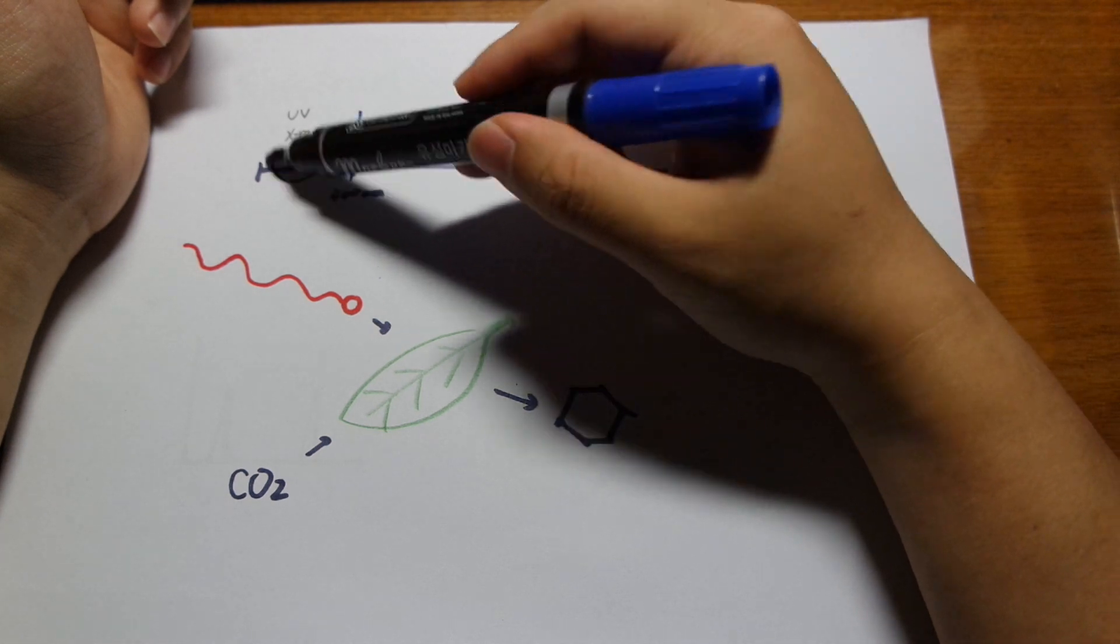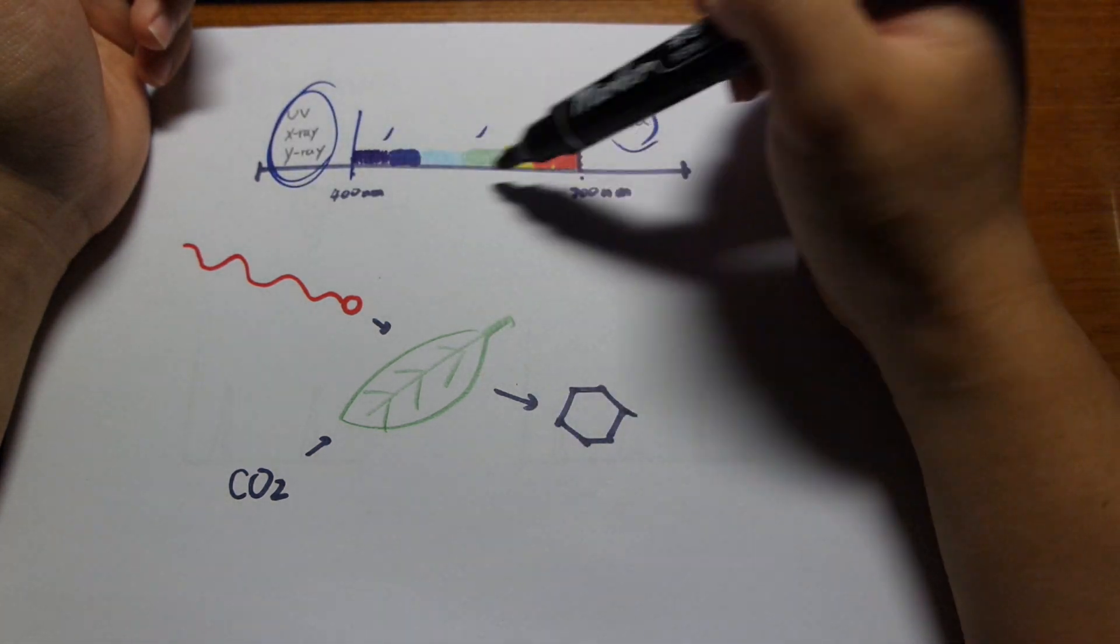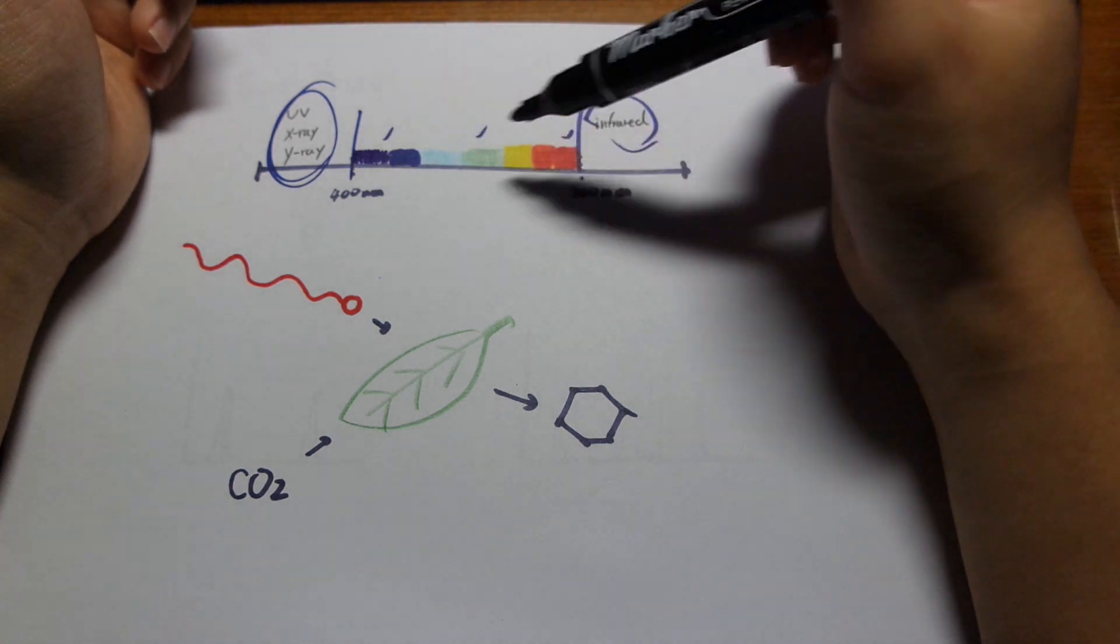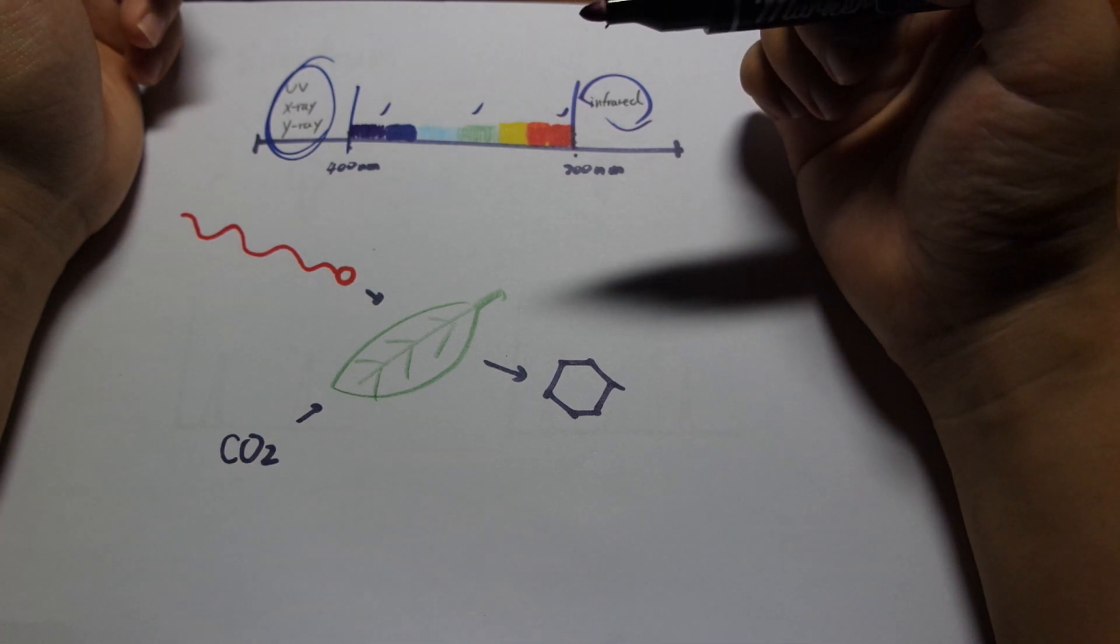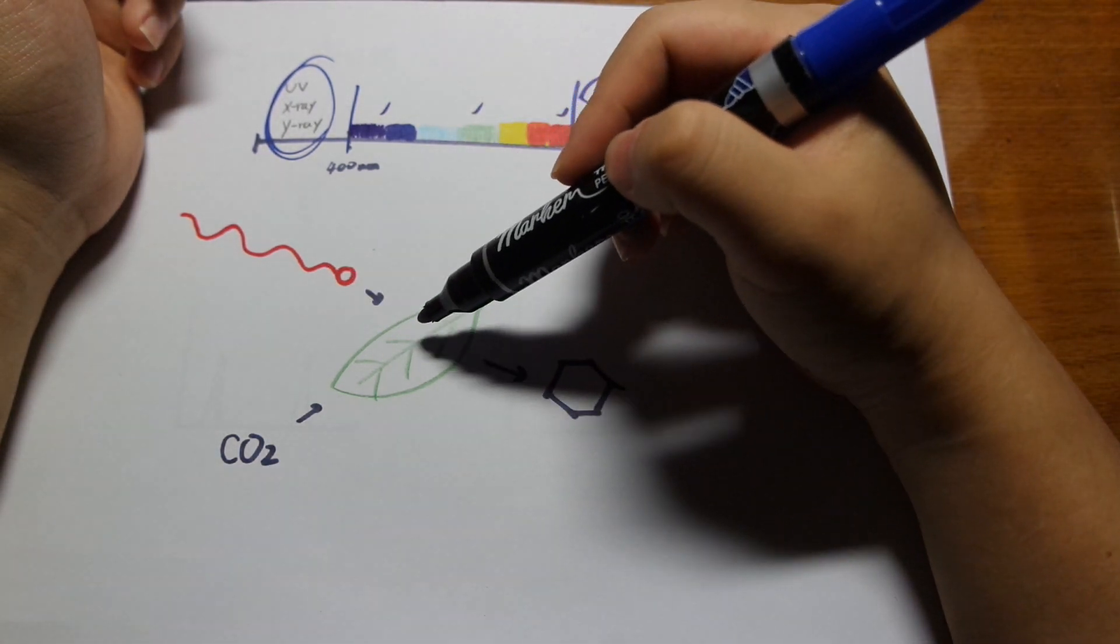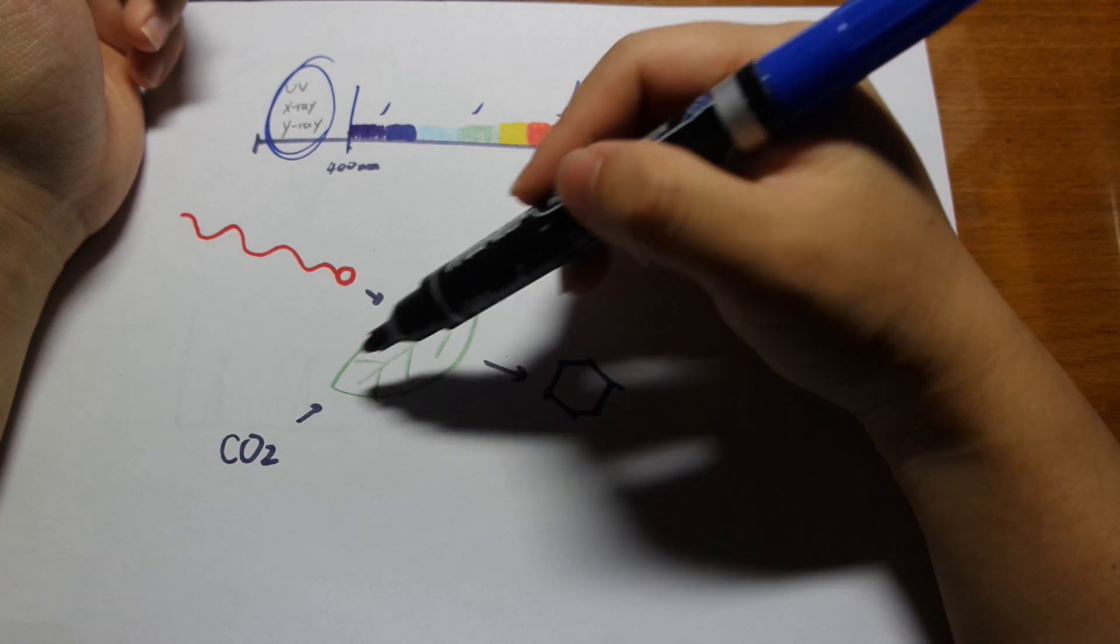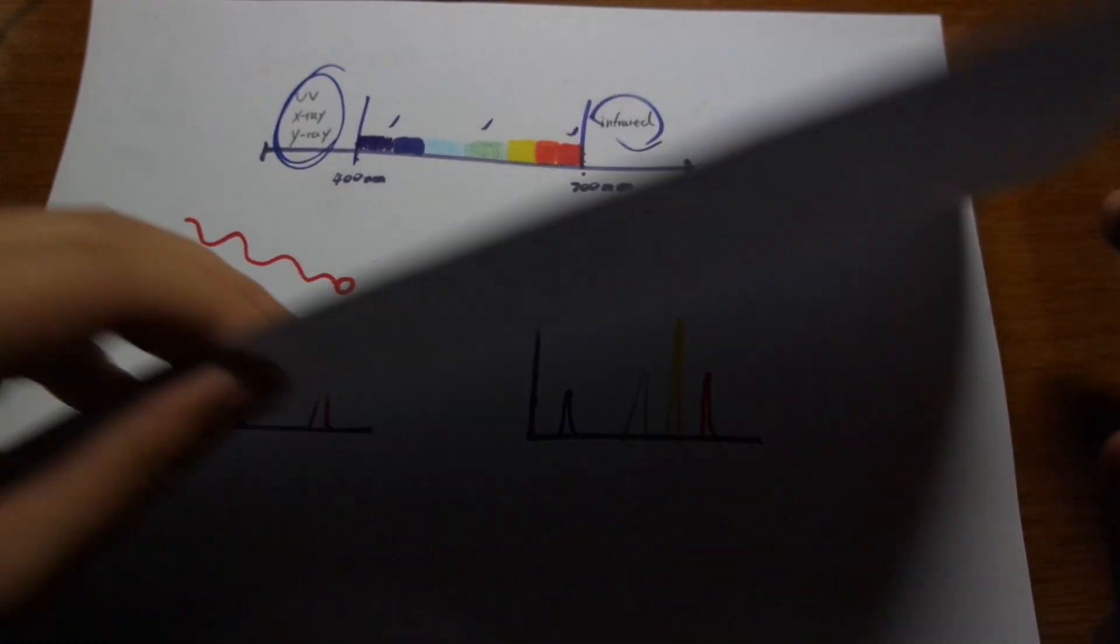So what matters for plants is this visible light. Plants cannot photosynthesize with these or these. This is what we need. So as long as we have lots of this in here, red, blue, green, these lights, a plant will be able to use it. So basically photosynthesis is a photon of the right wavelength coming into the leaf. And the leaf will pick up CO2 from the air and turn it into sugars. So that is basically what photosynthesis is.